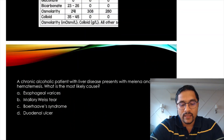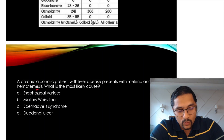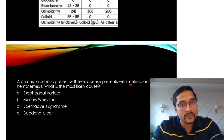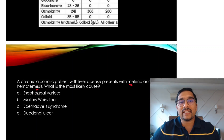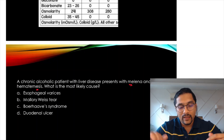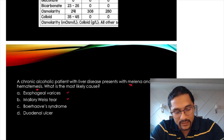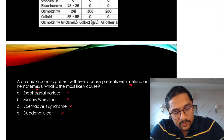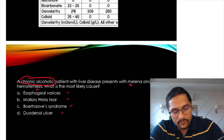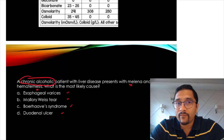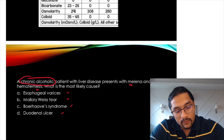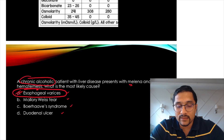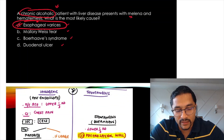A chronic alcoholic patient with liver disease presents with melena and hematemesis — upper GI hemorrhage. Causes include varices, Mallory-Weiss tear, Boerhaave's, or duodenal ulcer. The hint is 'chronic alcoholic' — in chronic alcoholic patients, Mallory-Weiss tear can occur due to splitting of mucosa and submucosa, but more common will be esophageal varices. So varices is the best answer here.